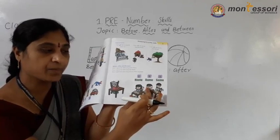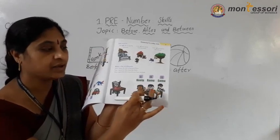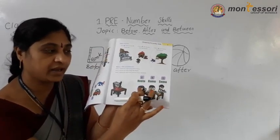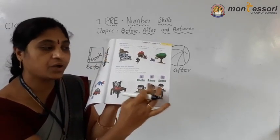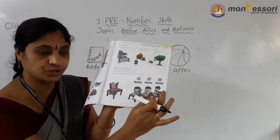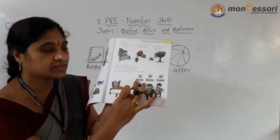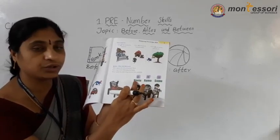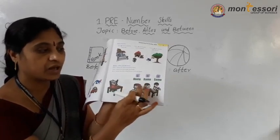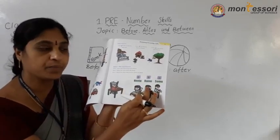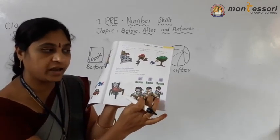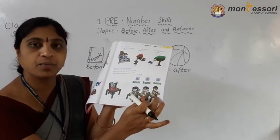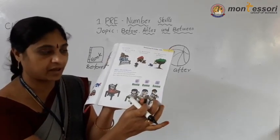Here Neetu's place is between Ramu and Somu. Means here Neetu is before, Ramu is between, and Somu is after.